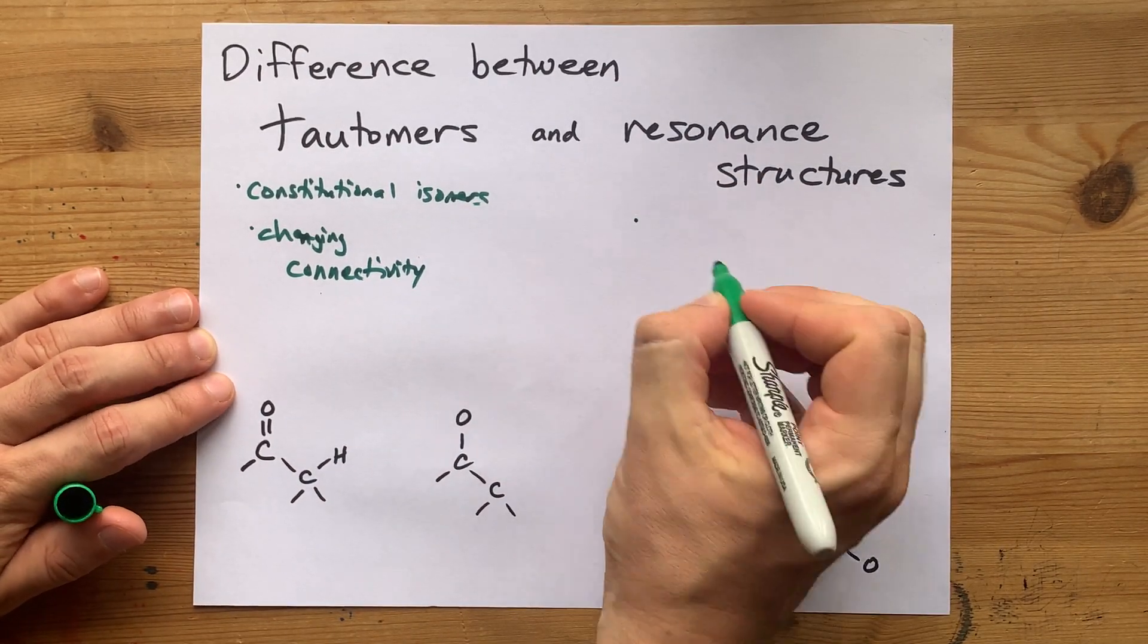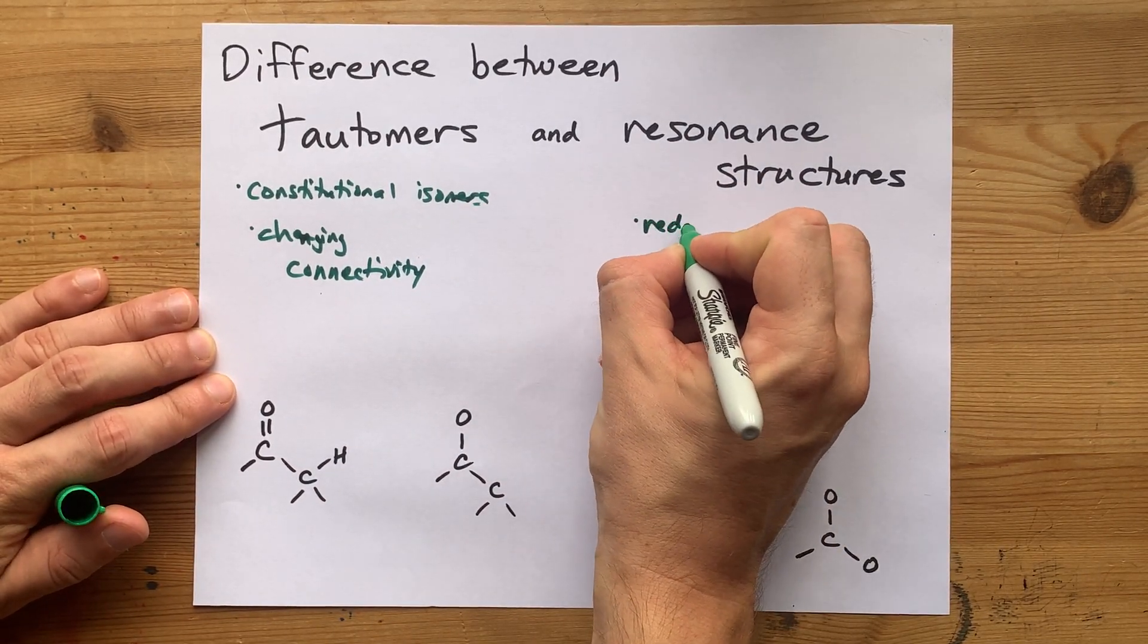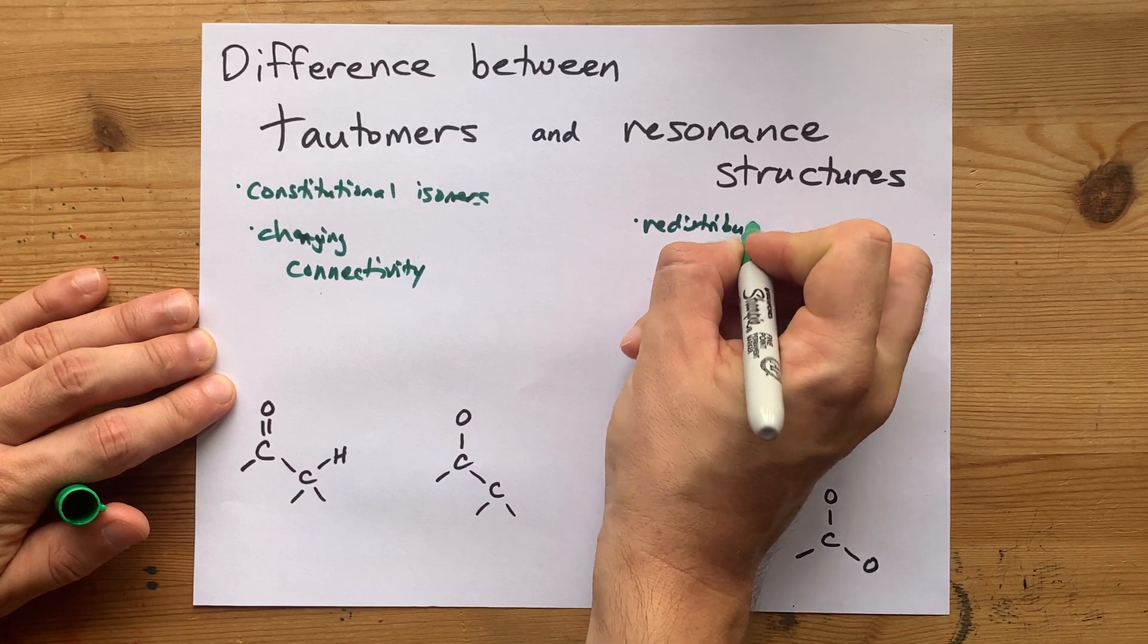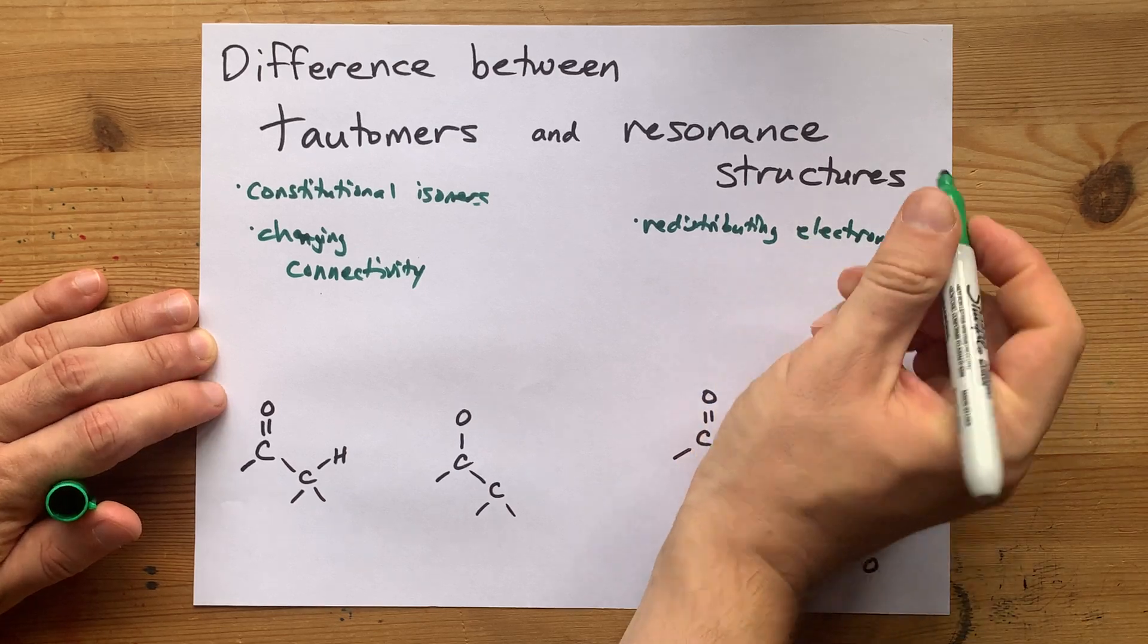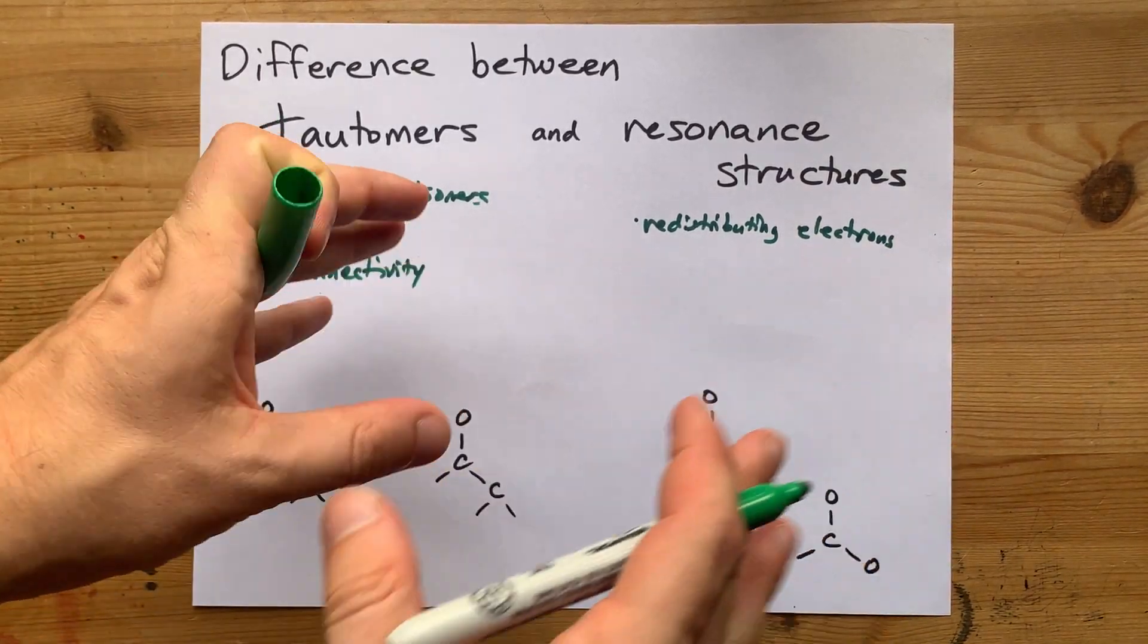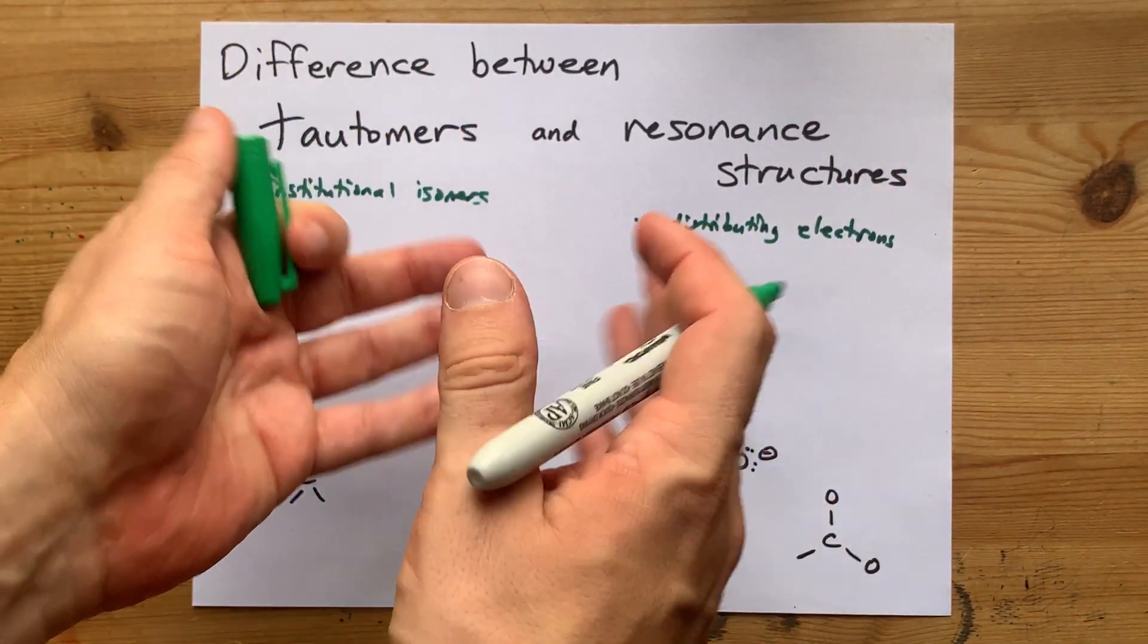Whereas for resonance structures, you're really only redistributing the electrons, atoms that are holding atoms together. You're not fully breaking bonds between two atoms and then reattaching a new atom in a new place.